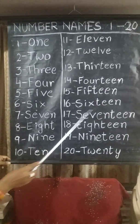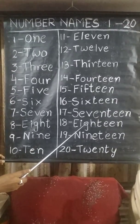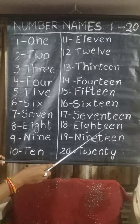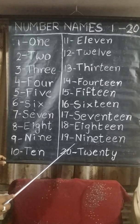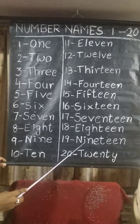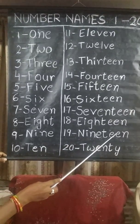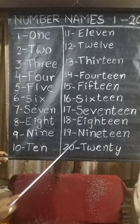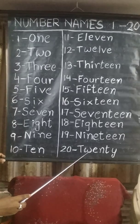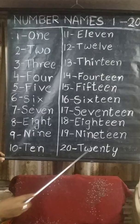18 — E, I, G, H, T, E, E, N. EIGHTEEN. 19 — N, I, N, E, T, E, E, N. NINETEEN. 20 — T, W, E, N, T, Y. TWENTY.